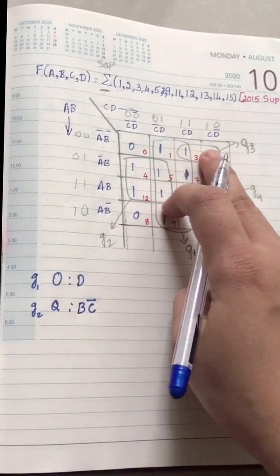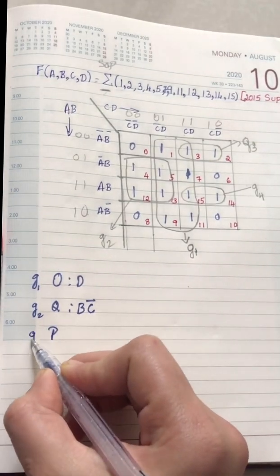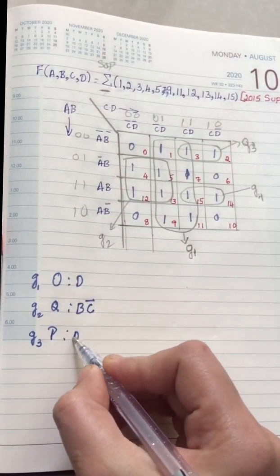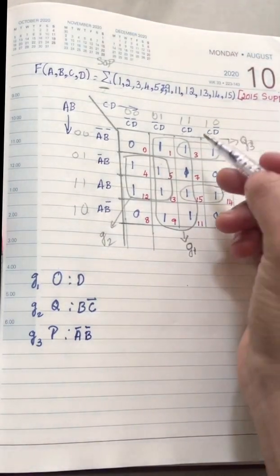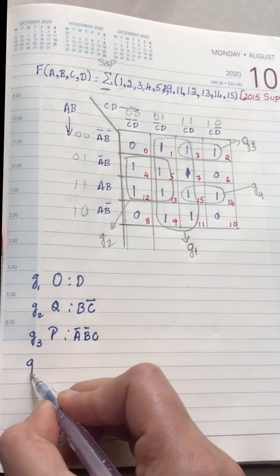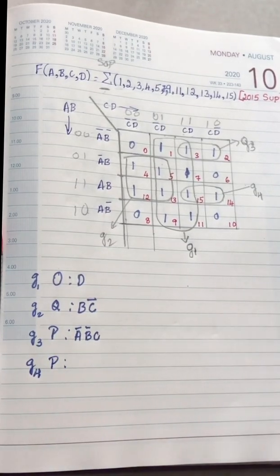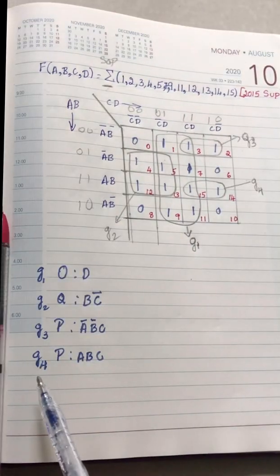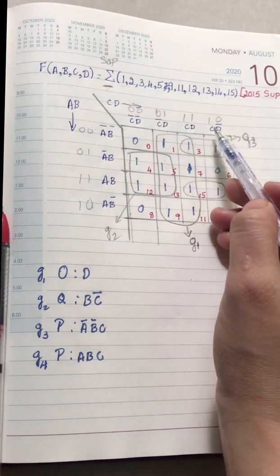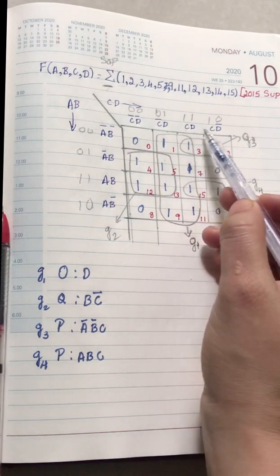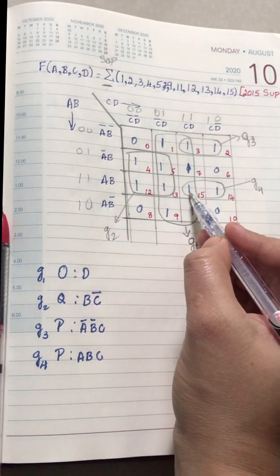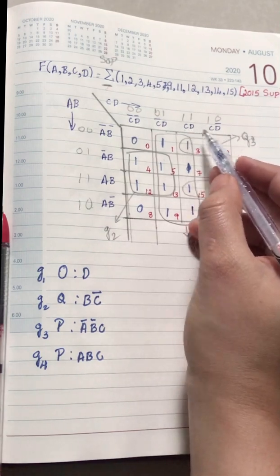Next go with Group 3, which is a pair. In this pair you have A B and A-bar B-bar. The common column term is C. So you write C for this pair. For Group 4, another pair, you have A B and the common term is again C. For both squares in Group 4, A B is common in the rows and C is common in the columns, so you write A B C.